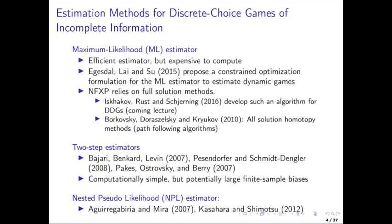There are several different ways of doing this. Maximum likelihood full solution methods, the maximum likelihood estimator, or we can use two-step estimators like we have talked about previously, or the nested pseudo likelihood NPL estimator. This is like the third time I'm repeating this — first it was for the case of single agent dynamic models, and last time it was for static games of incomplete information, where we also covered all these different methods. Now we're going to do that for the full dynamic games. Many of the conclusions are the same: maximum likelihood is the most efficient thing you can do.